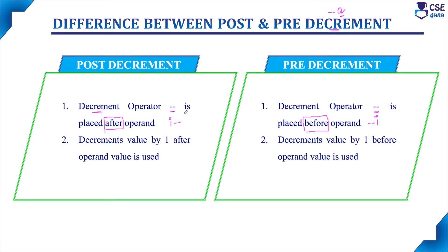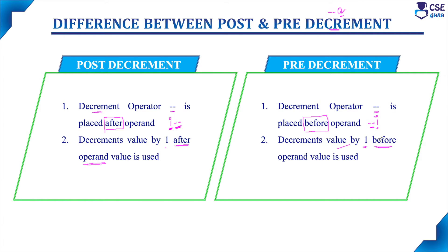In post decrement, it decrements the value of the variable by one after the operand value is used. Since the operand is placed first, the value stored in the variable is used first, then the operator executes — that is, it decrements the value by one. In pre decrement, since the operator is placed first and the operand is placed next, it decrements the value of the variable by one before the operand value is used, so the decrement executes first and then the variable value is used.